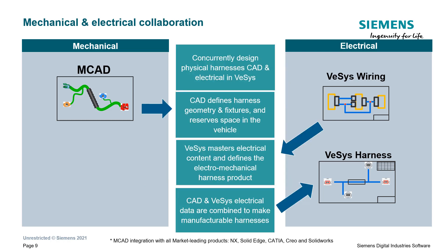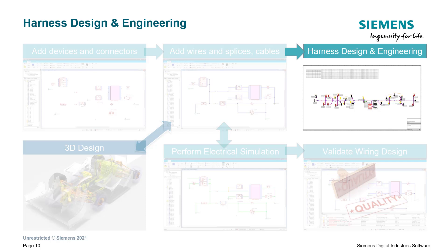The Vsys tools easily integrate with MCAD tools and make the mechanical and electric design much more efficient. For example, customers can concurrently design physical harnesses in Siemens CAD and electrical in Vsys. Siemens CAD draws from the parts library in Vsys to populate the CAD of the wire harness, and the electrical data from Siemens CAD and Vsys are combined to make a manufacturable harness.